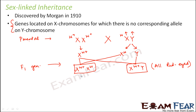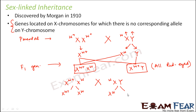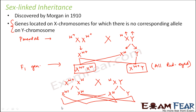Now, if we take the F1 female — which is red-eyed but heterozygous — and cross her with a white-eyed male, what are the possible offspring? The female produces two types of gametes: X carrying W+ and X carrying W. The white-eyed male also produces two types: X carrying W and Y. Combining these, the possible offspring are X(W+)X(W), X(W+)Y, X(W)X(W), and X(W)Y.